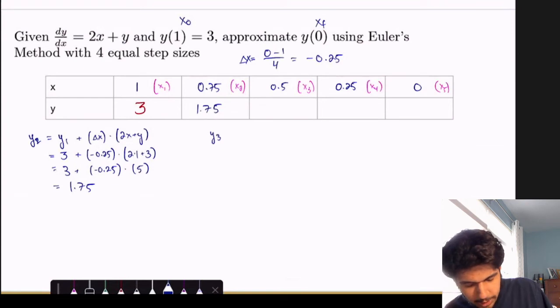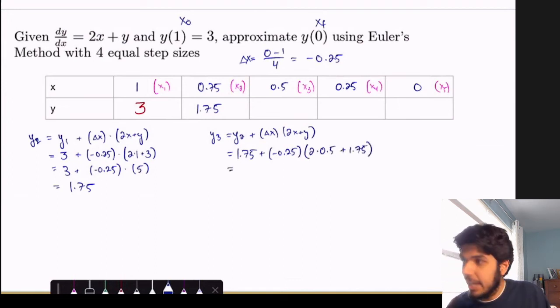Okay, so now we do y sub 3. That's equal to y sub 2 plus delta x times 2x plus y. And then again, use the previous value. So this time 1.75 plus negative 0.25 times 2 times 0.5 plus 1.75. And we can compute this out. This should be 0.9375.